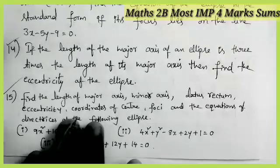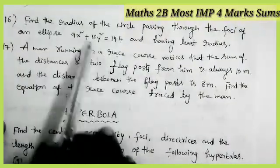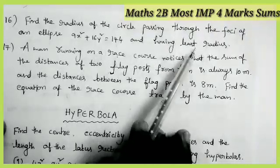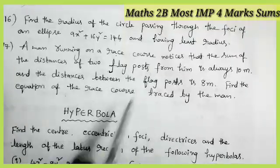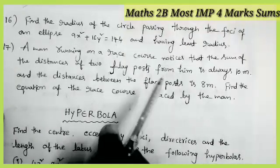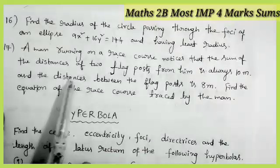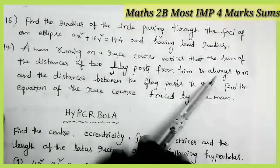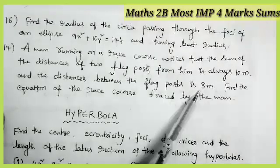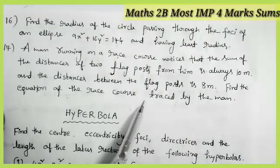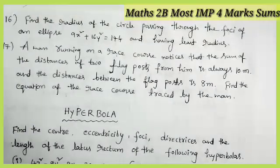Two more questions are there from this topic: find the radius of the circle passing through the foci of the ellipse having least radius. And the last one — a man running on a race course notices that the sum of the distances from two flags is always 10 meters and the distance between the flag posts is 8 meters. Find the equation of the race course traced by the man. These are the important questions from the topic ellipse.